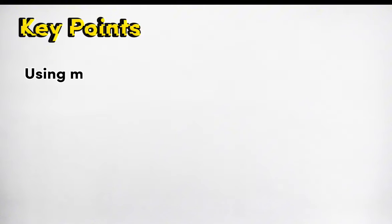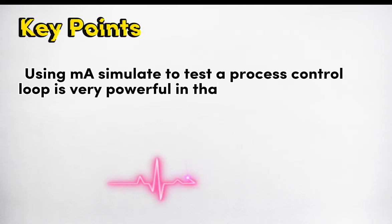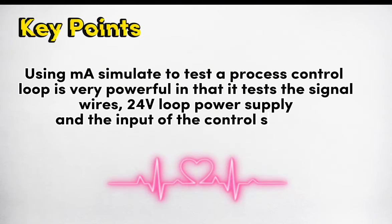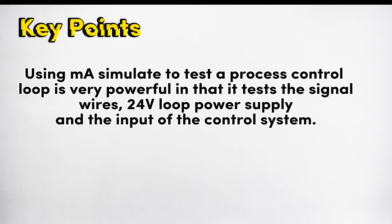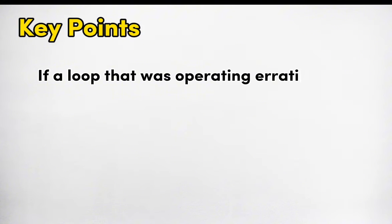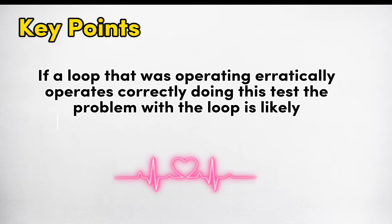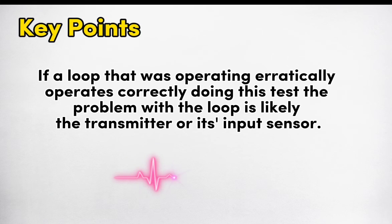Using milliamp simulate to test a process control loop is very powerful in that it tests the signal wires, 24-volt loop power supply, and the input of the control system. If a loop that was operating erratically operates correctly during this test, the problem with the loop is likely the transmitter or its input sensor.